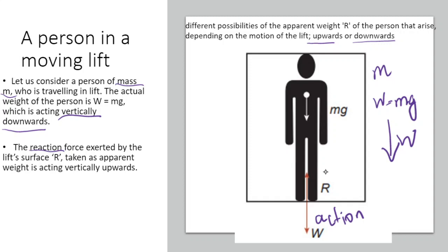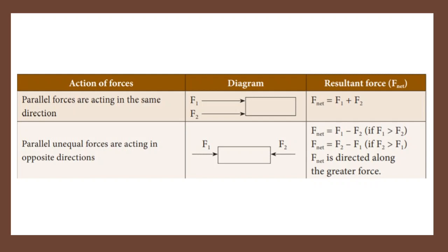The reaction force R is what you feel as apparent weight. Depending on how the lift moves, R will change. There are two forces: one force W acting downwards and reaction force R acting upwards — these are parallel, unequal forces acting in opposite directions.